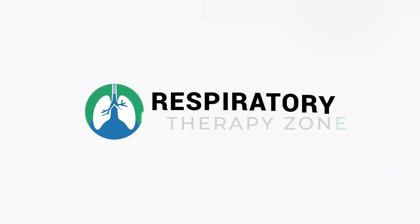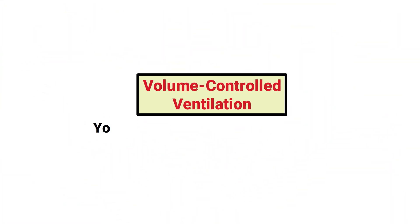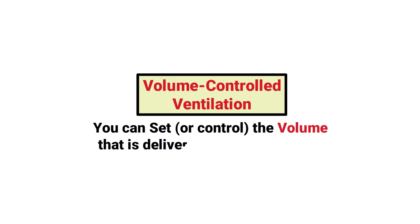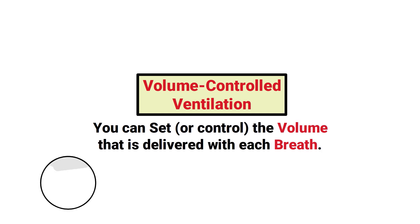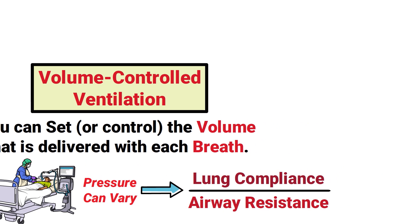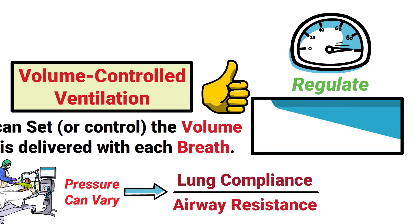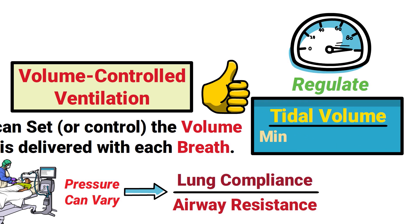Volume controlled ventilation means that you can set or control the volume that is delivered with each breath. With a set volume, the patient's pressure can vary depending on their lung compliance and airway resistance. One of the primary advantages of volume controlled ventilation is that it allows us to regulate both the patient's tidal volume and minute ventilation.